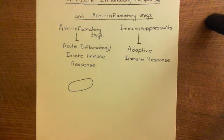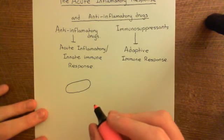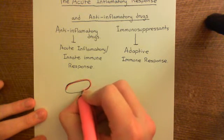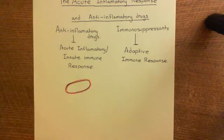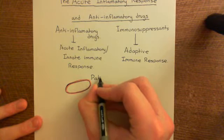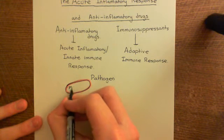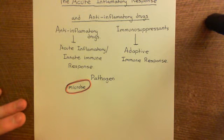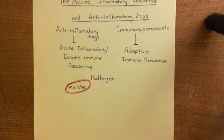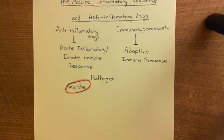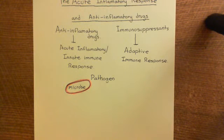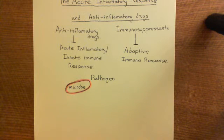We do not want a microbe within our tissue because there's a risk it will divide and divide and divide, producing a whole population of microbes competing with our human cells for nutrients such as oxygen and glucose. So we want to eradicate these microbes — it's far better to eradicate them than let them grow out of control, which would result in the death of human cells as they get out-competed.